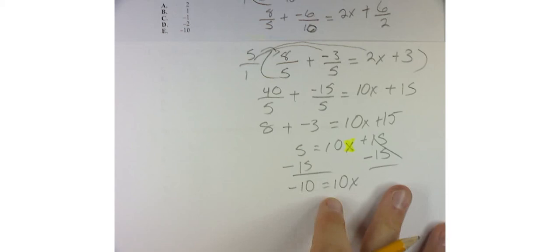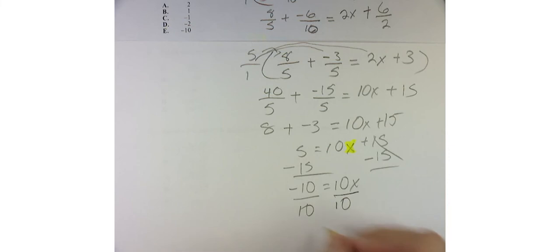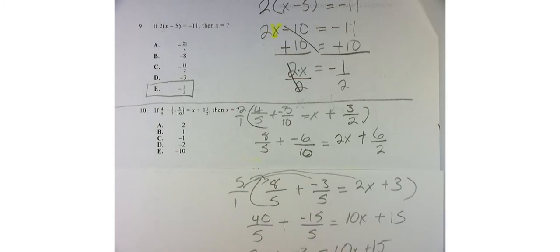10 times x can be undone by dividing everything by 10 on both sides. And I get x is equal to negative 1. Hey, that's one of my answers, isn't it?